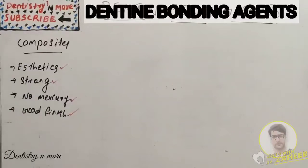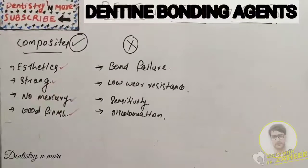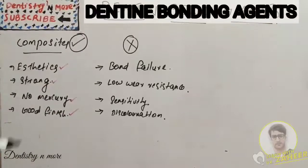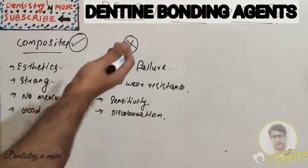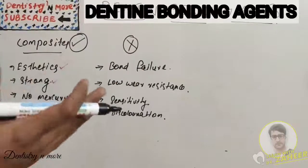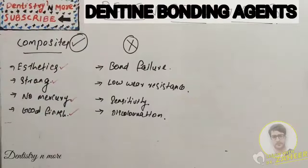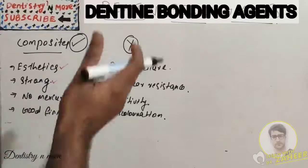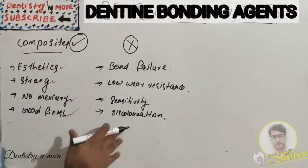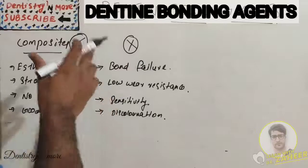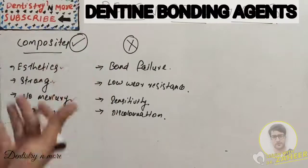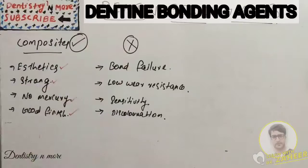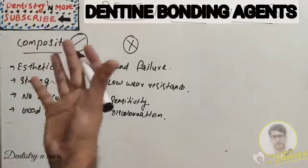But what are the problems composites face? Though composites have chemical bonding with the tooth structure, failure rates are more than amalgam because of bonding failure or low wear resistance. Patients report post-operative sensitivity and marginal discoloration. So despite good properties - chemical bonding, aesthetics, and finishing - the failure rates are higher than amalgam.